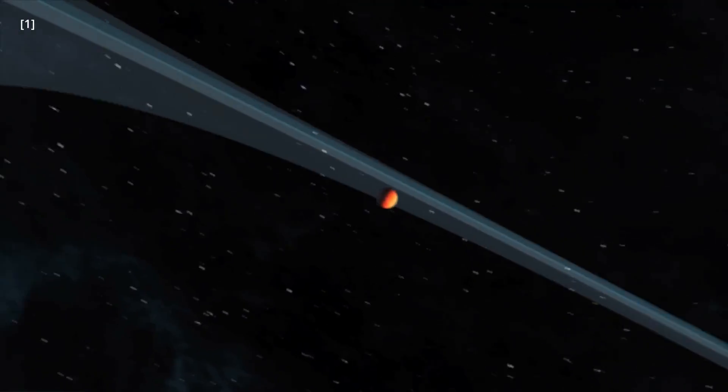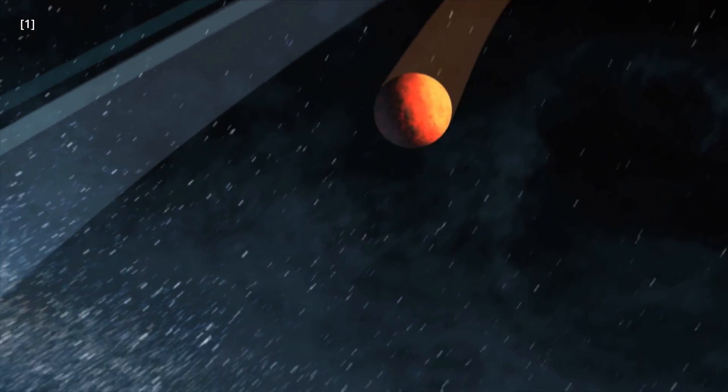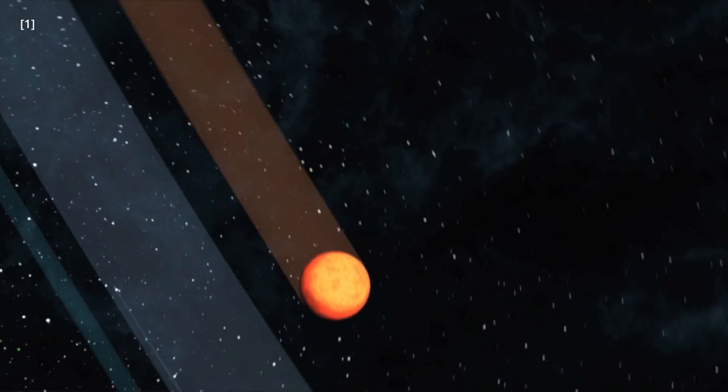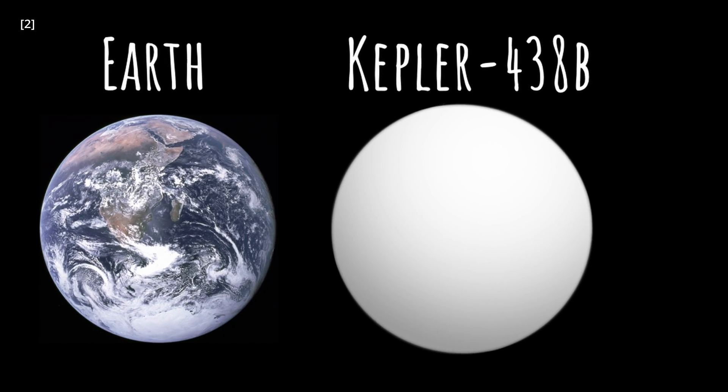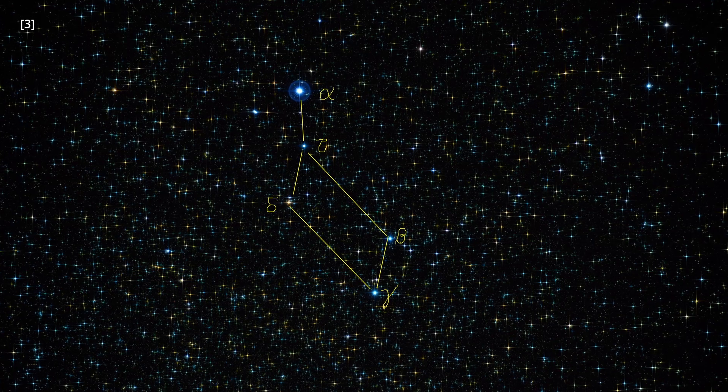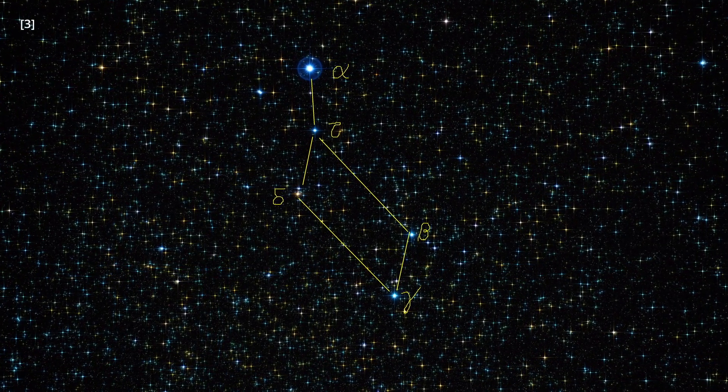And among all those exoplanets, there's one that stands out as the closest match to our own world. It's called Kepler-438b, and it's located approximately 470 light-years away in the constellation Lyra.